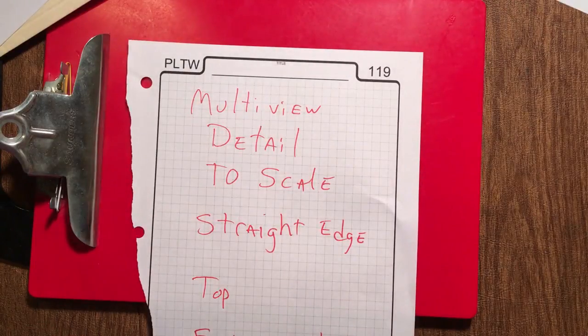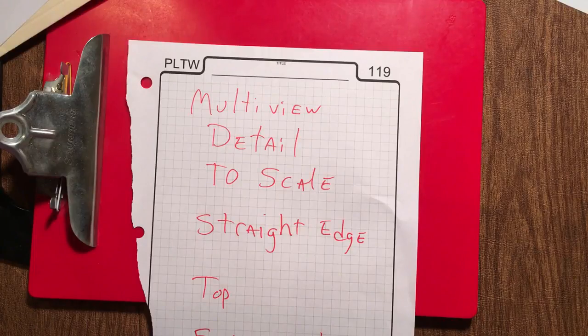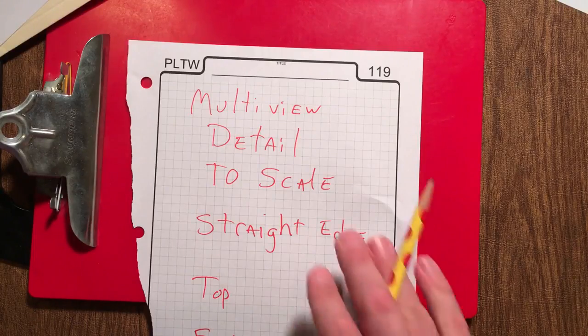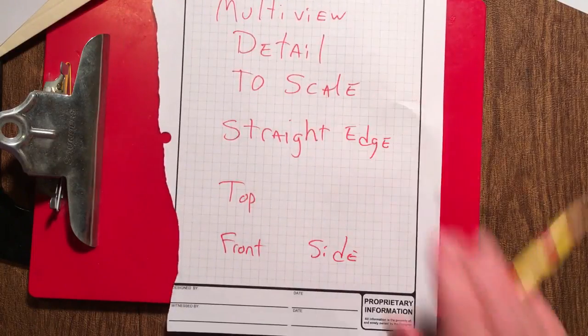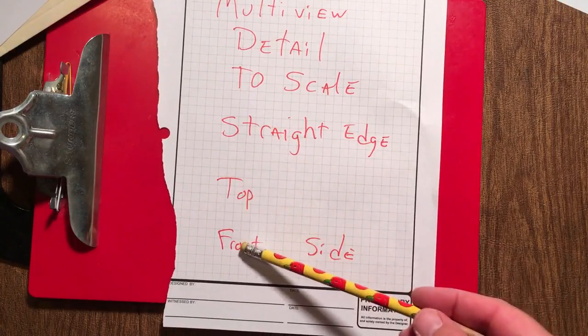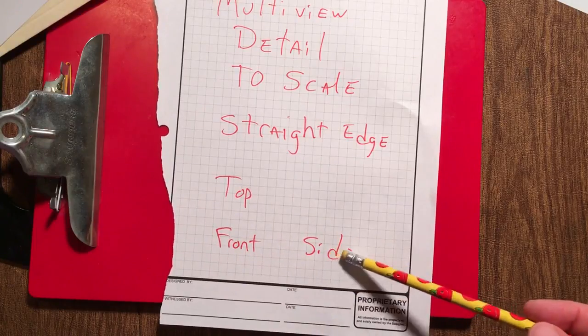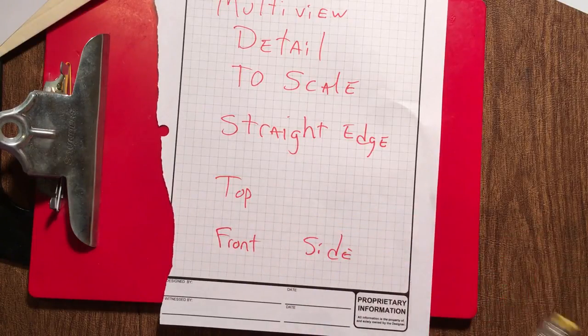And then we have multi-view which also is detailed, to scale, and uses a straight edge just like the isometric does. But this grid paper is different. This is like our traditional normal 90 degree angle grid paper. Multi-view is that you put a top view, then below the top view you put a front view, and then to the right of the front view put a side view. And these views should line up.